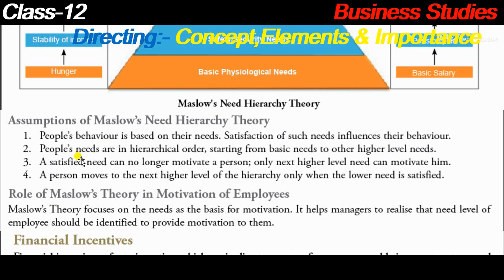Second assumption: people's needs are in hierarchical order, starting from basic needs to higher level needs. A person strives to fulfill needs from the first level to the last. Third assumption: a satisfied need can no longer motivate a person - only the next higher level need can motivate them. For example, once you receive your basic salary, you automatically get motivated for a pension plan.